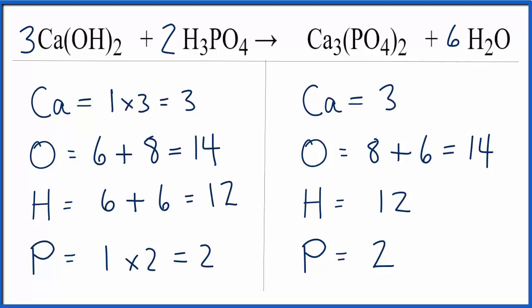Oftentimes, if you start by balancing the simpler atoms, other things tend to fall into place as you move along. This is Dr. B with the balanced equation for Ca(OH)2 plus H3PO4 yields Ca3(PO4)2 plus H2O. Thanks for watching.